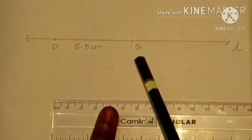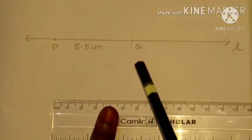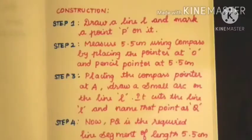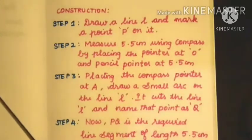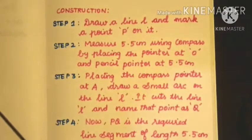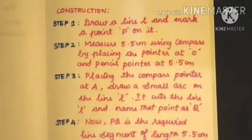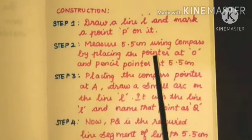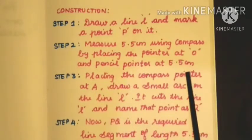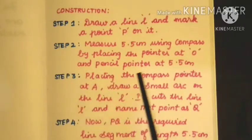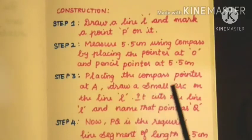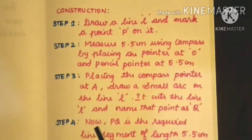Write the construction on the left-hand side of the geometry note using pencil. Step 1: Draw a line L and mark a point P on it. Step 2: Measure 5.5 cm using compass by placing the pointer at 0 and pencil pointer at 5.5 cm. Step 3: Place the compass pointer at P and draw a small arc on line L. It cuts line L — name that point as Q. Now PQ is the required line segment of length 5.5 cm.